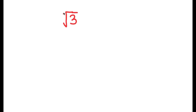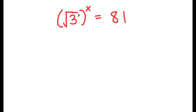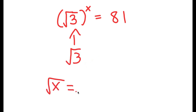In this problem, we have the square root of 3 to the power of x is equal to 81. To solve this, I'm going to start with the square root of 3. The square root of a number — say the square root of x — is the same thing as x to the power of 1 half, because the root here is 2, but we just don't write that.